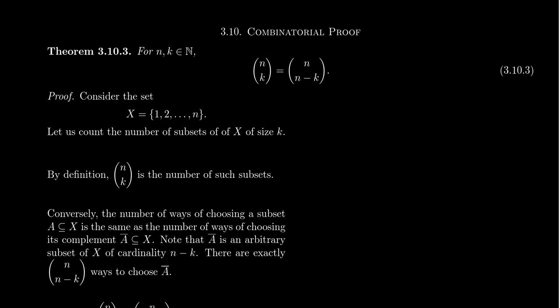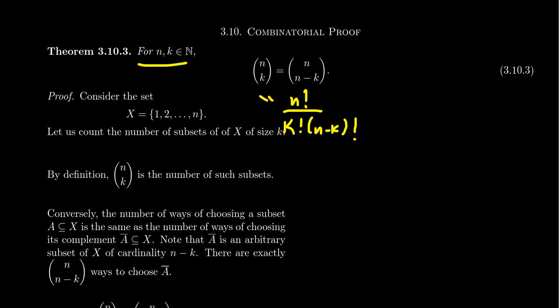The first identity we've already seen before, but I want to provide a combinatorial proof. For any natural numbers n and k, the binomial coefficient n choose k is the same thing as n choose n minus k. If you use the formula n factorial over k factorial times n minus k factorial, it's very easy to show this identity. But the formula proof doesn't give us any reasons why they're the same other than they just happen to have the same formula.